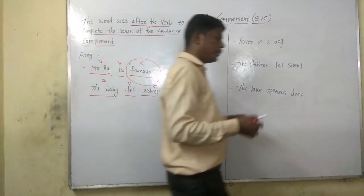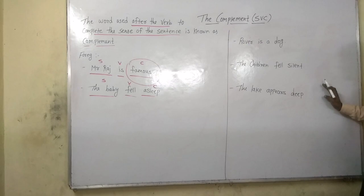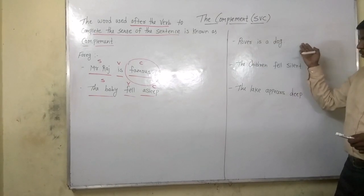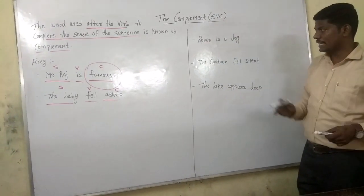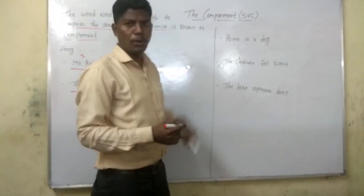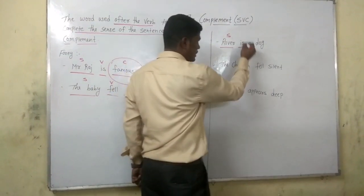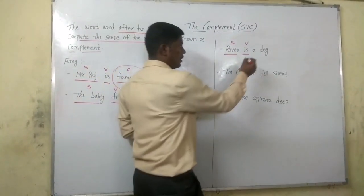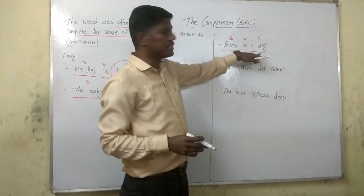I will take some more examples to make you understand what complement is all about. Here we have: 'Rover is a dog.' Rover is the main part of the sentence, the doer of the action — that is the subject. 'Is' is the verb. And 'a dog' is completing the sense of the sentence, so 'a dog' is the complement.